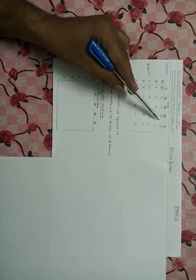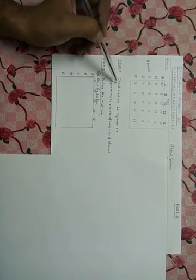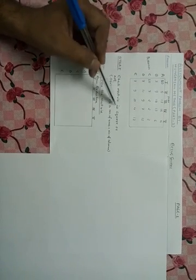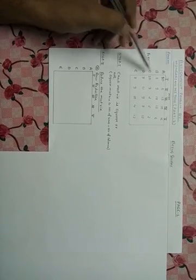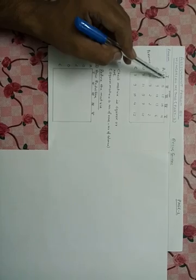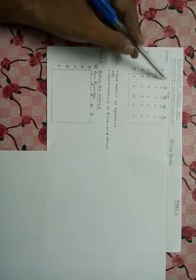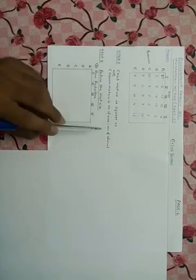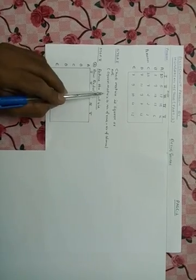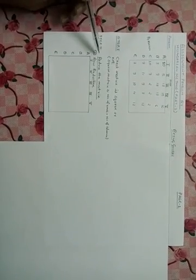In the first step, we check whether the matrix is square or not. In our example, we have five persons — that is five rows — and five jobs — that is five columns. Since the number of rows equals the number of columns, our matrix is square, so we go to the next step.